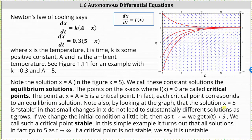By looking at the graph, the solution x equals 5 is stable, meaning small changes in x do not lead to substantially different solutions as t grows. If we change the initial condition a little bit, then as t approaches infinity, x of t approaches 5. So if we start with an x value a little more than 5 or less than 5, as t approaches infinity, x of t approaches 5, which is why the critical point is considered stable. In this simple example, all solutions go to 5 as t approaches infinity. If a critical point is not stable, we say it is unstable.